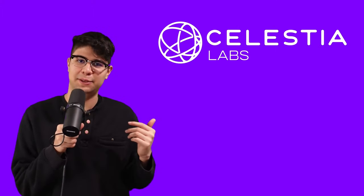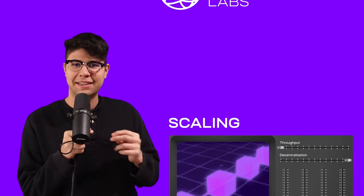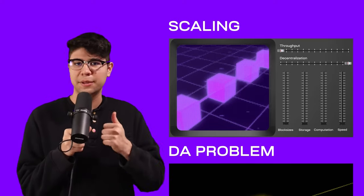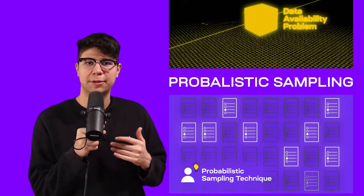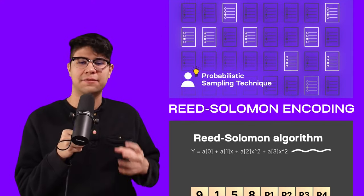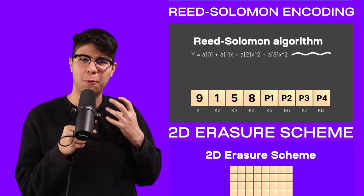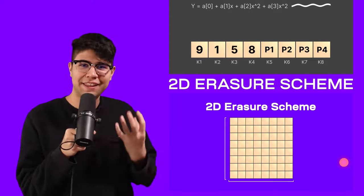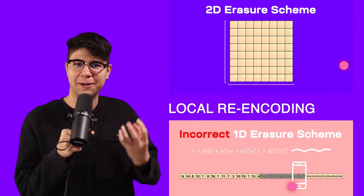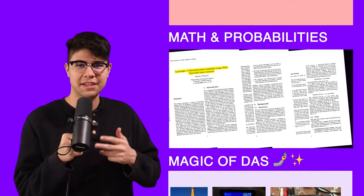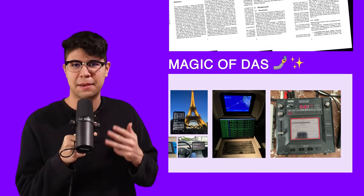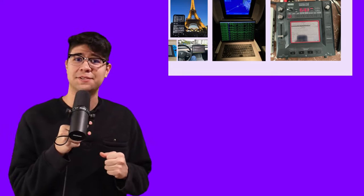I'm so excited to talk about data availability sampling, but first a special thanks to our sponsor Celestia for allowing me to go modular. This video is jam-packed and isn't afraid to get technical. We're going to be talking about blockchain scaling, the DA problem, the concept of probabilistic sampling techniques, then a technical deep dive talking about the core of how Celestia works, explaining the technology that no other videos are willing to get into, and then talk about the math, the probabilities, and the magic of DAS data availability sampling light clients. We have a lot to learn, so let's get to it.